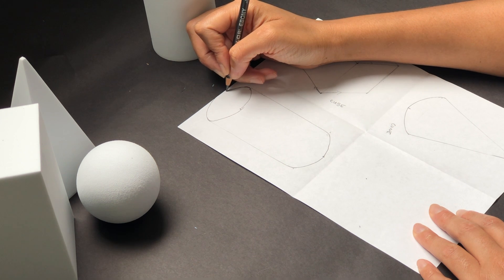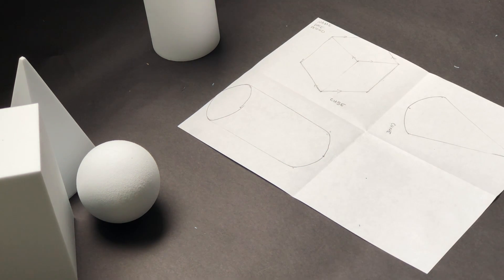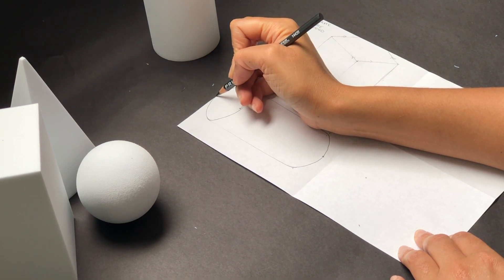And notice that my arc is a bit too large on the top. So I'm going to correct that and make it a bit smaller and then clean it up with an eraser.